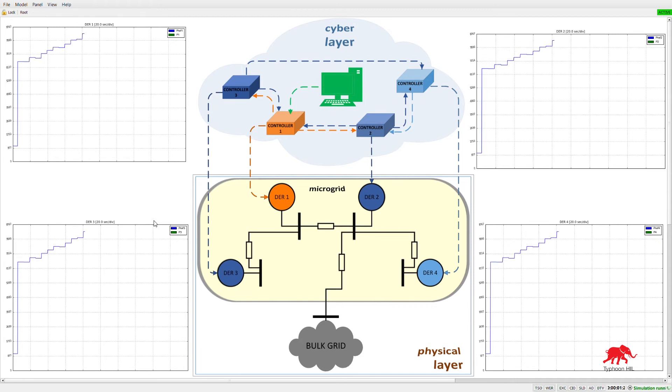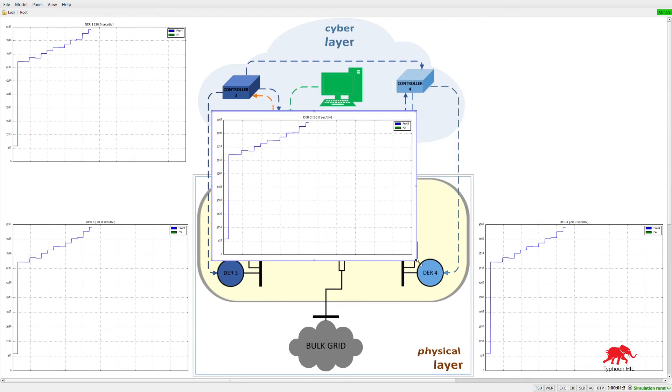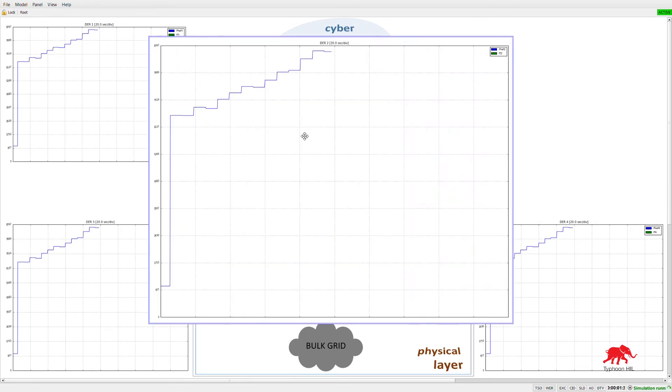If you look closely, there's an overlap between the reference values and the power outputs. This is because we have great performance results.